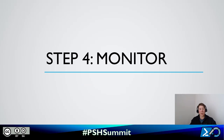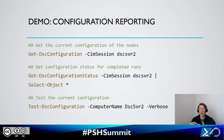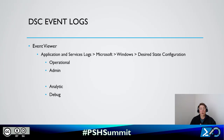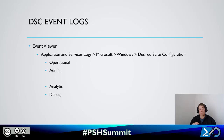The final step in our pipeline for DSC is the monitoring phase. That's somewhat out of scope for today, but there are commands and functions to investigate once you have this set up. DSC also writes to the Windows event logs under Applications and Services Logs > Microsoft > Windows > Desired State Configuration. The first two logs are enabled by default. If you need extra information for debugging, you can turn on two additional logs for DSC.